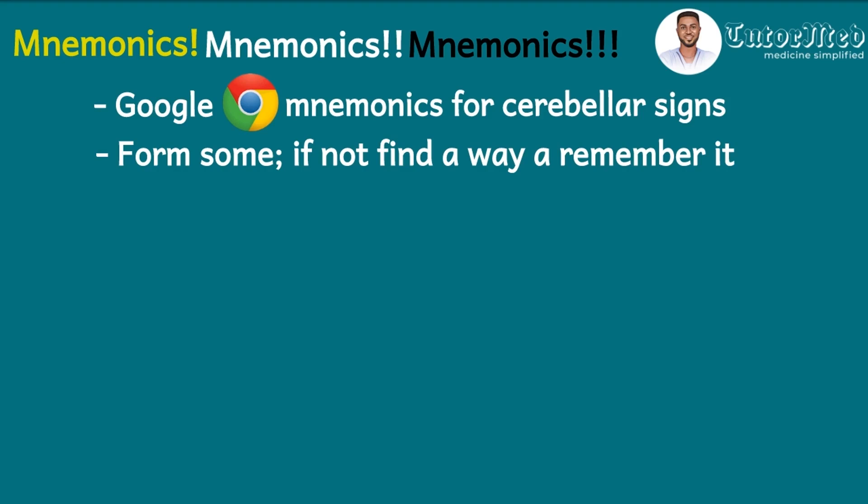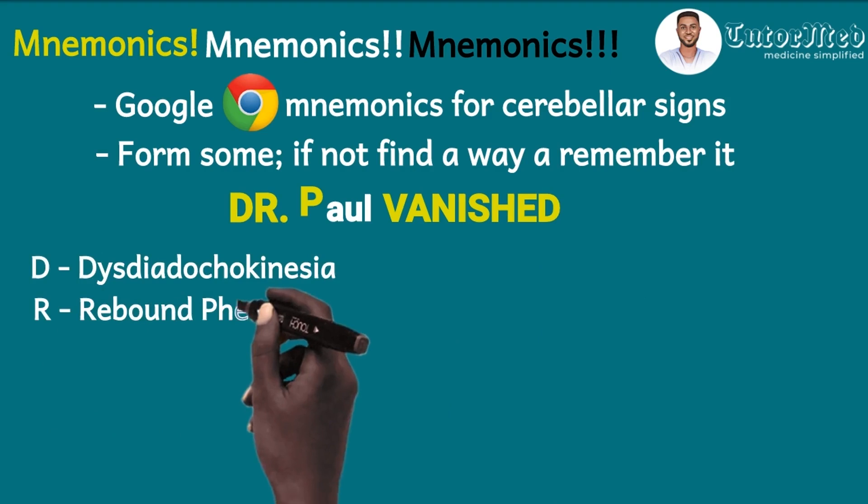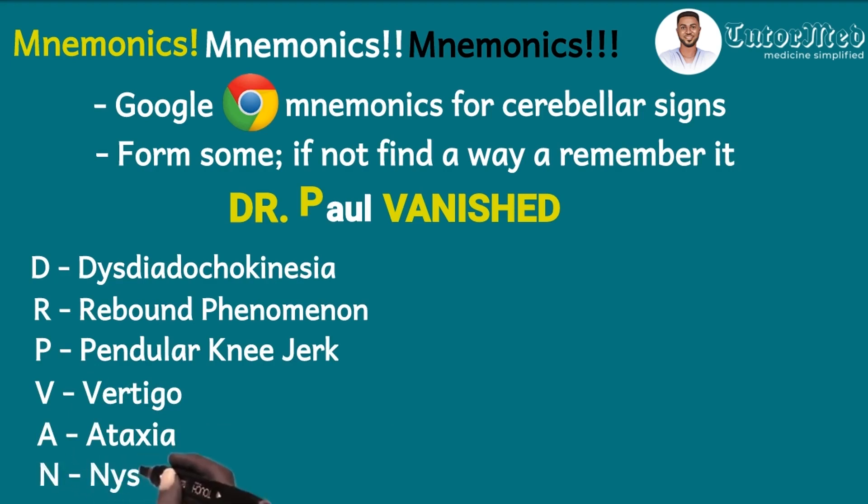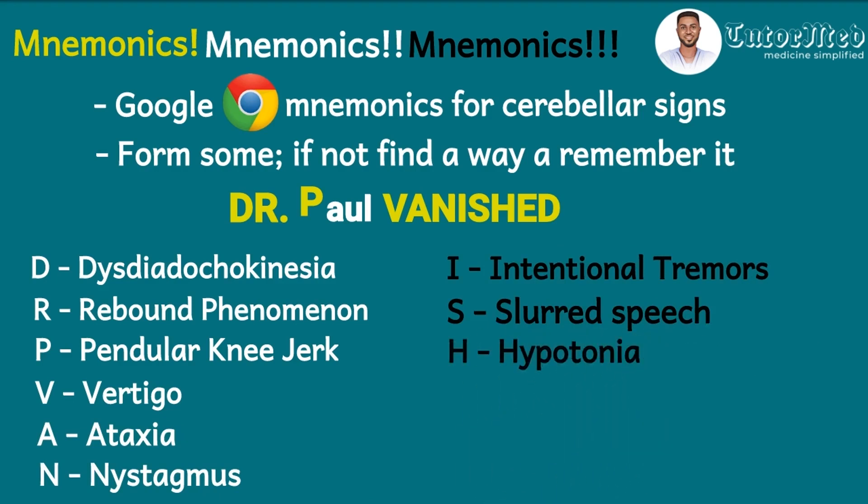So when I Googled, I found VANISHED, but I added Dr. Paul to cover for the other clinical features in the textbook. And so the mnemonic is Dr. Paul VANISHED when he was asked to examine a patient with cerebellar lesions. So Dr. Paul VANISHED: D for desdiadochokinesia, R for rebound phenomenon, P for pendular knee jerk, V for vertigo, A for ataxia, N for nystagmus, I for intentional tremors, S for slurred speech otherwise dysarthria, H for hypotonia, E for exaggerated broad gates, and then D for cerebellar drift. But we used the drift alone here. So get the mnemonics through Google or form some after you've gotten your clinical features from your reference text.